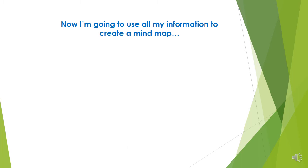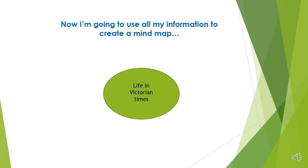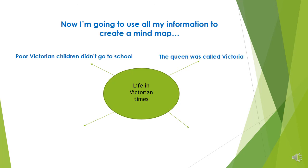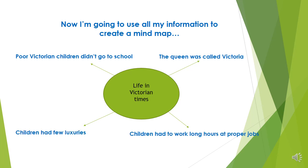Now I'm going to use all the information that I found to create a mind map. I'm going to use arrows to separate all my information so that each bullet point is really clear. So: poor Victorian children didn't go to school, the Queen was called Victoria, children had to work long hours, and children had few luxuries.